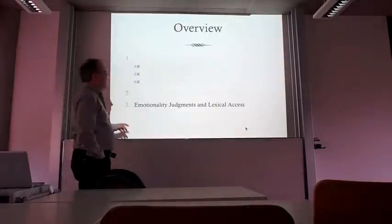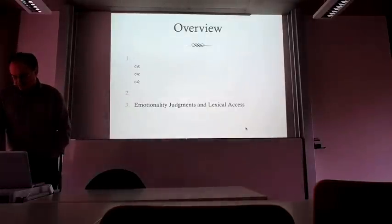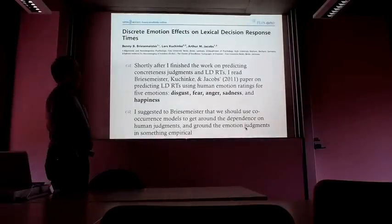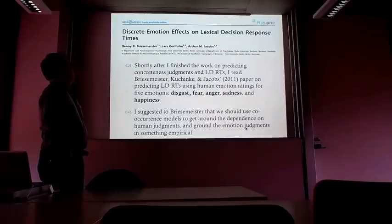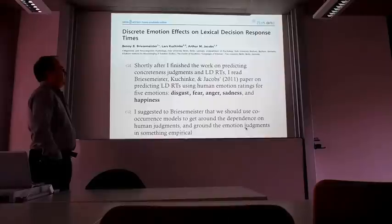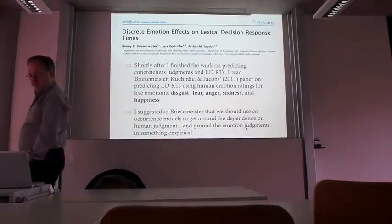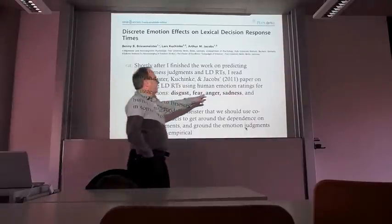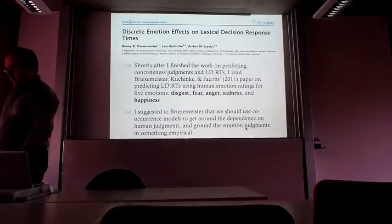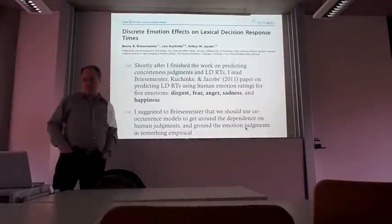Now I'm going to tell you quickly about something I've just been doing the last few months: using emotional judgments to look at lexical access. I got into this after reading a paper by Benny Briesmaster in Berlin. They tried to predict lexical decision reaction times using human emotion ratings—ratings given by humans to five emotion words: disgust, fear, anger, sadness, and happiness—and showed that these ratings, put into a regression equation, were a reliable predictor of how fast people made lexical decisions.